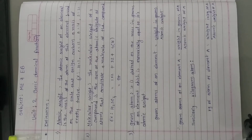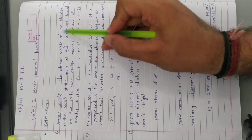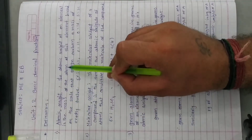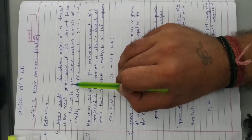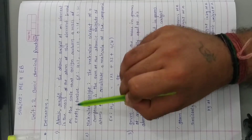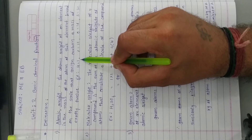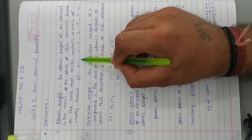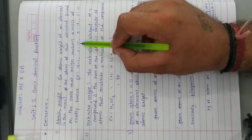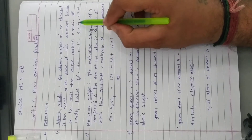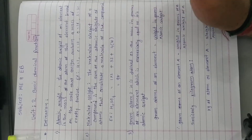So atomic weight: the atomic weight of an element is the mass of the atom of this element based on the scale that assigns carbon a mass of exactly 12. For example, hydrogen's atomic weight is 1, carbon's is 12, oxygen's is 16, and sulfur's is 32.